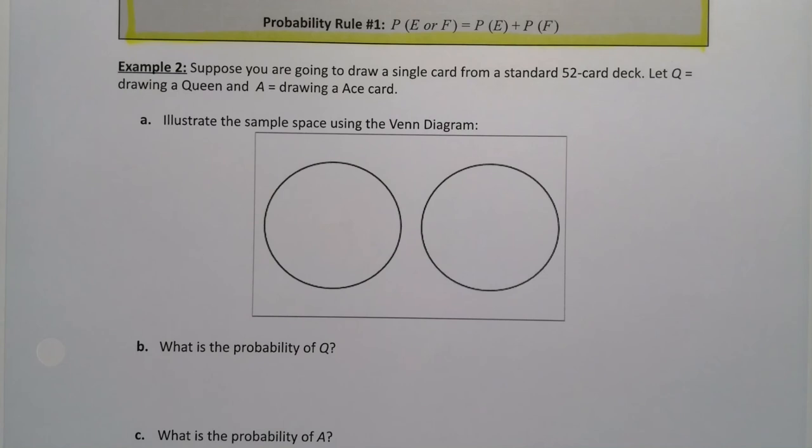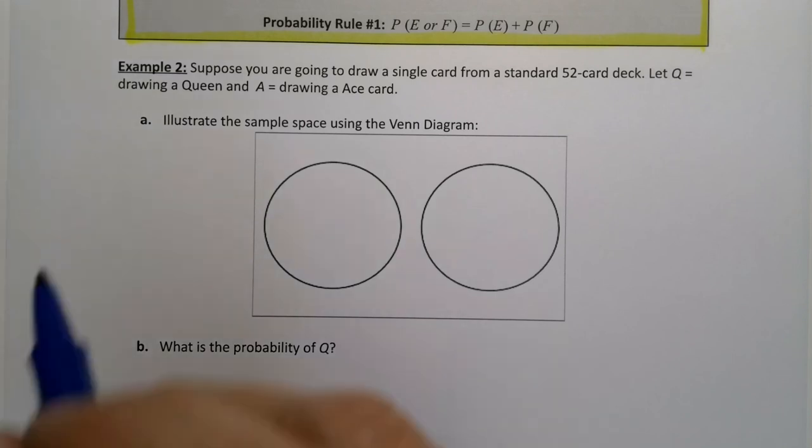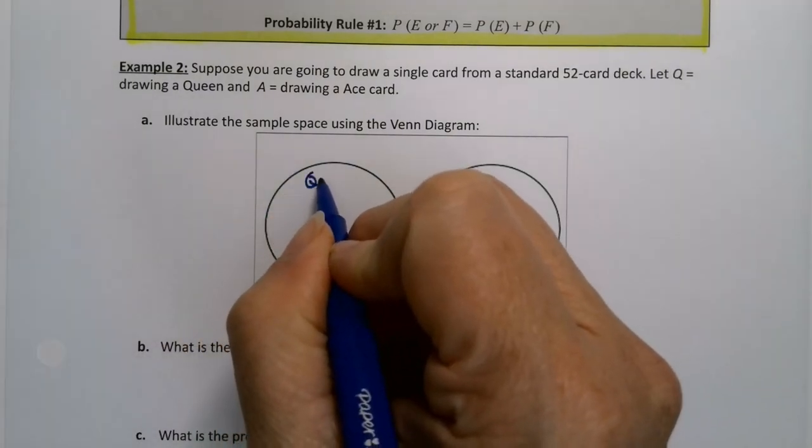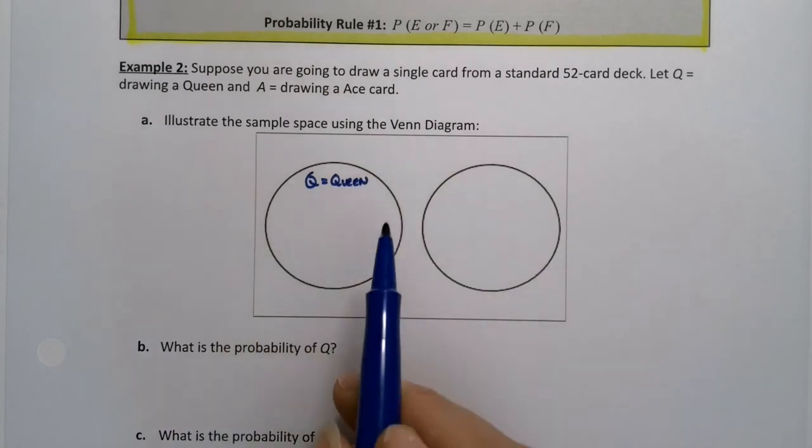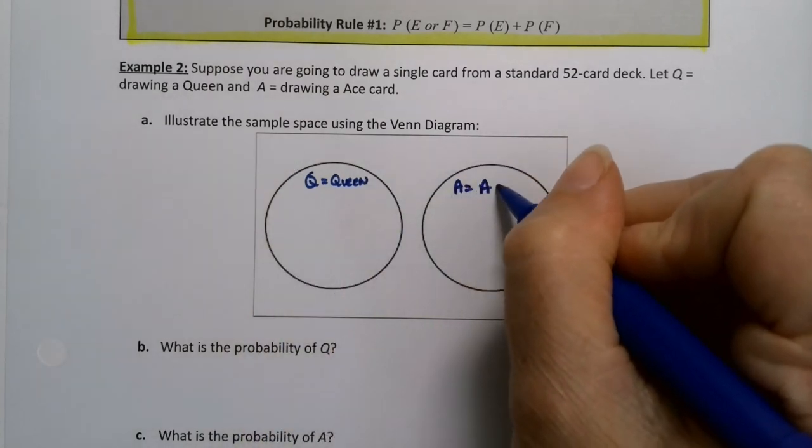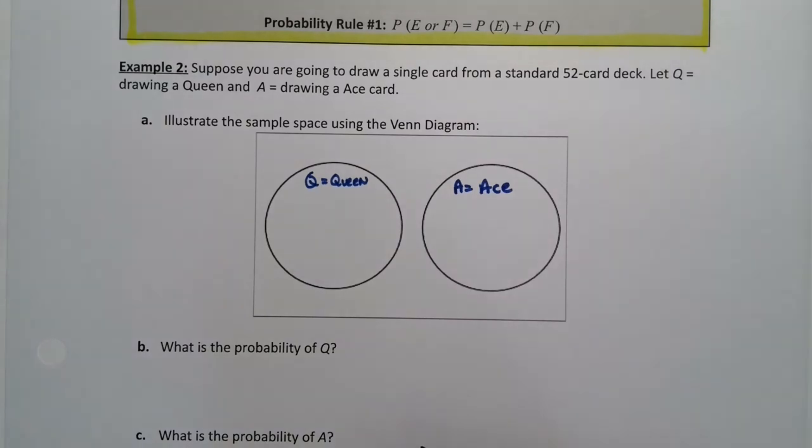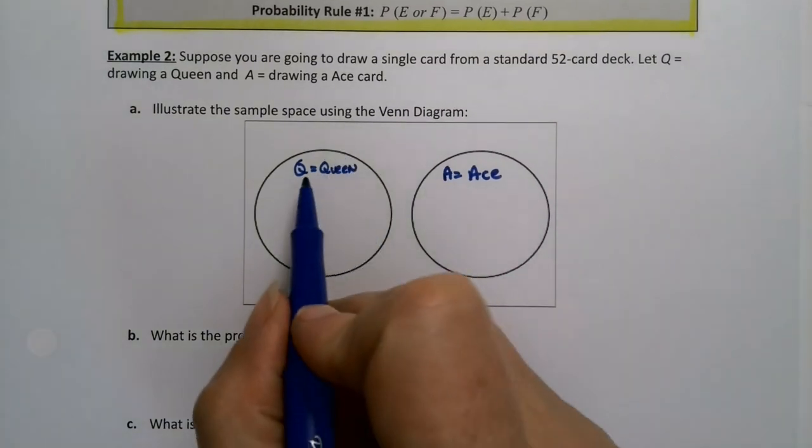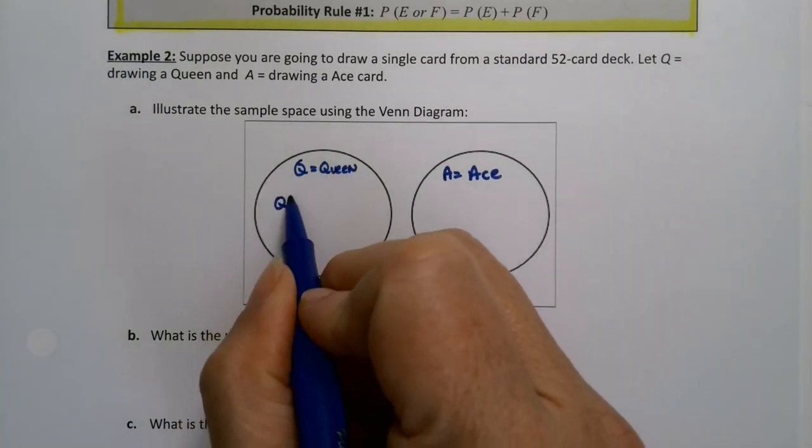All right, we have our card deck again. You're going to draw a single card from a standard 52 card deck. Let Q be drawing a queen, and A be an ace card.